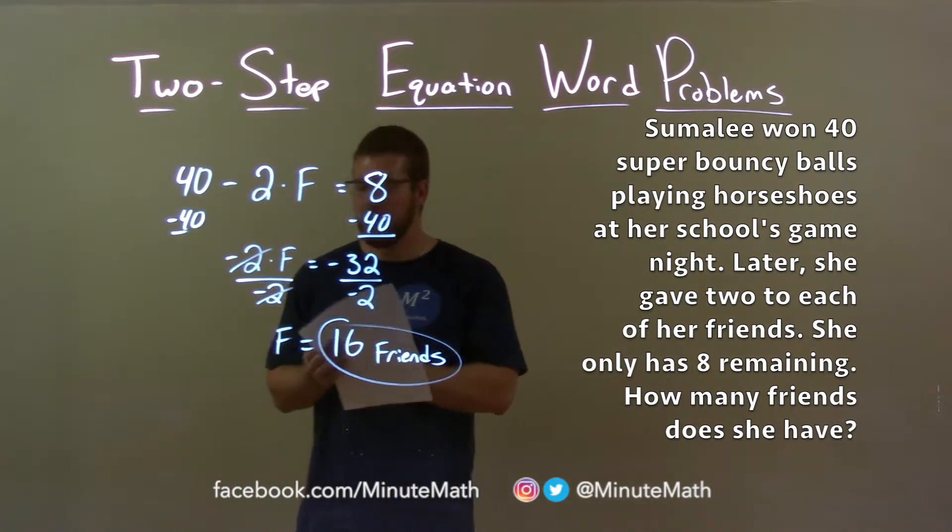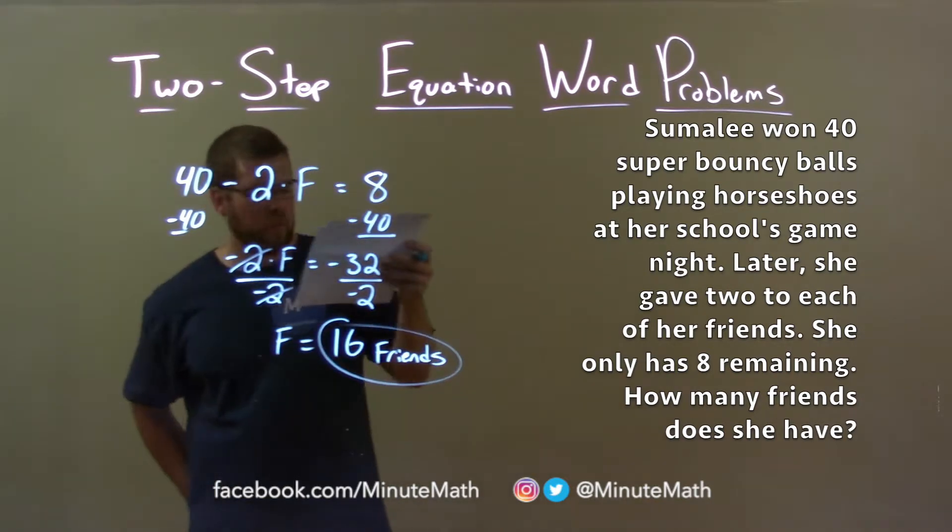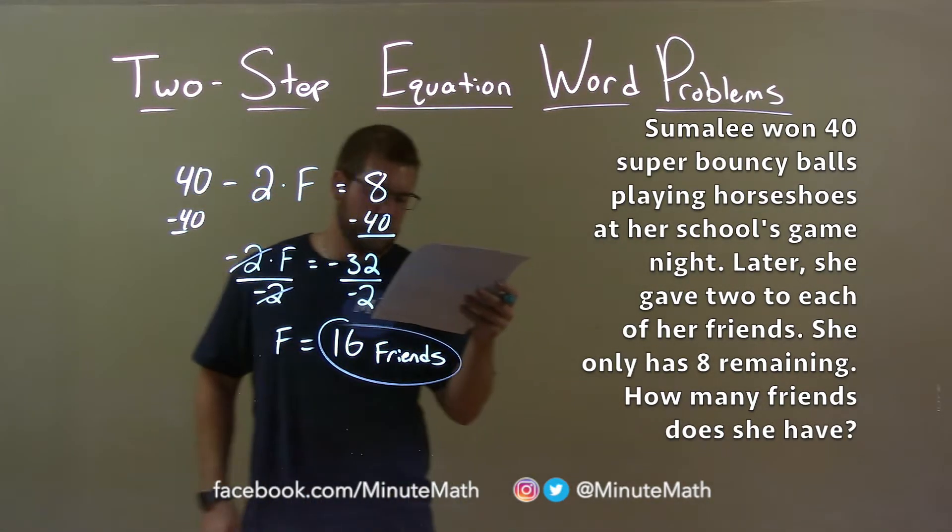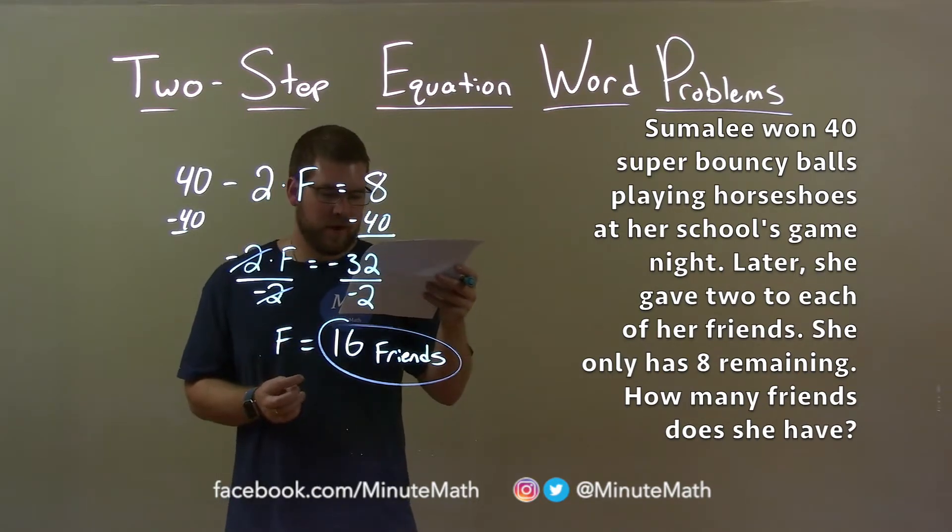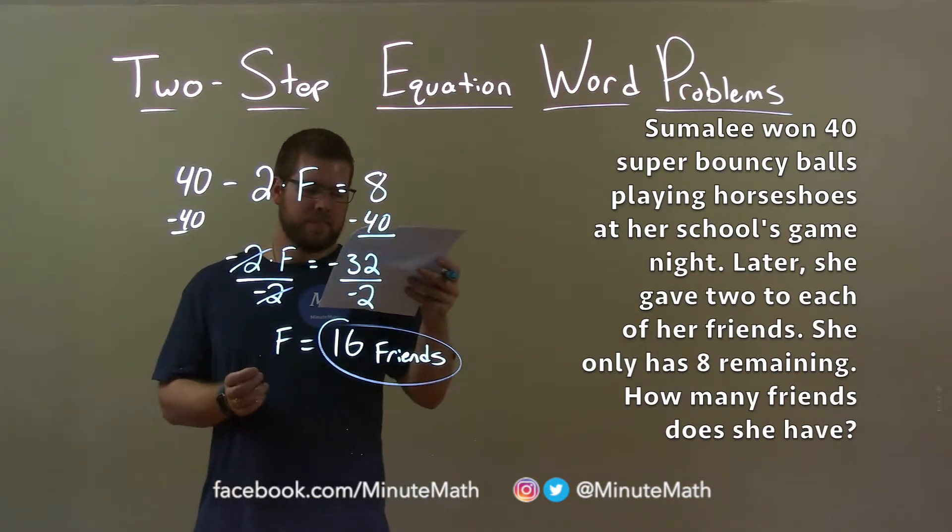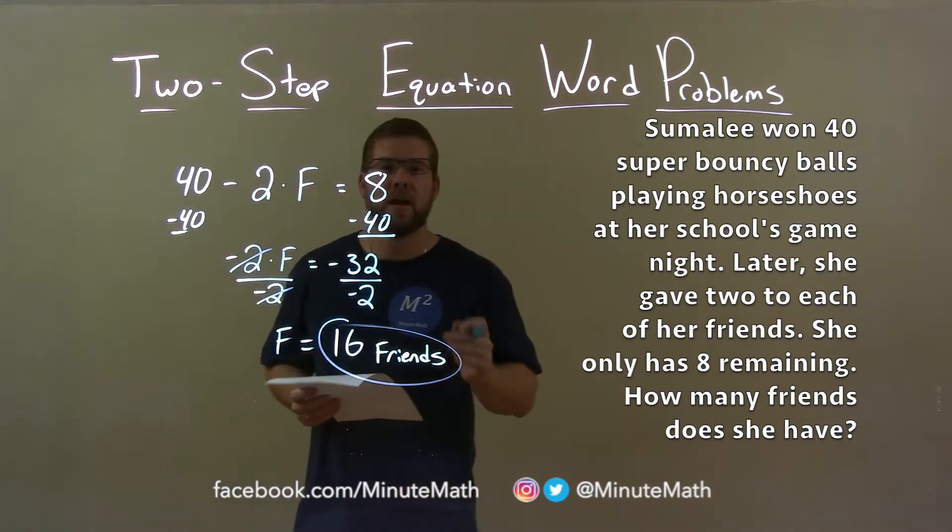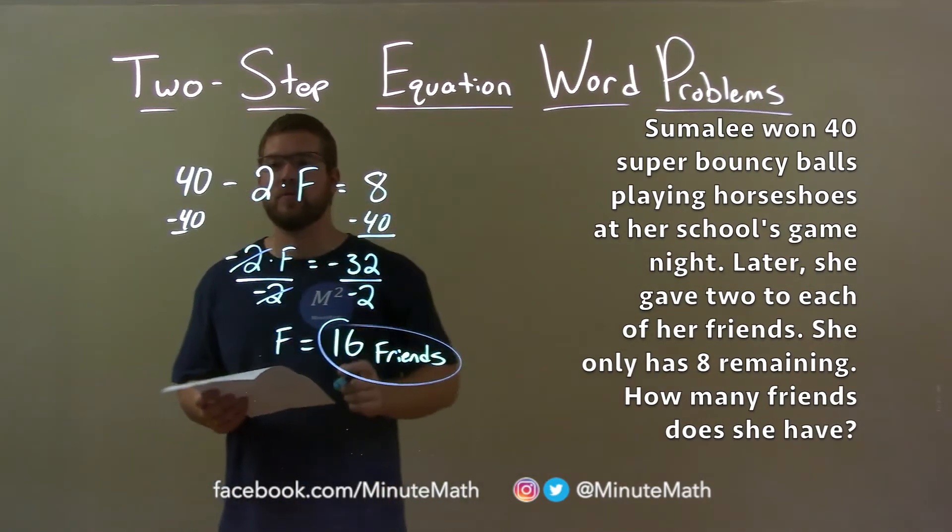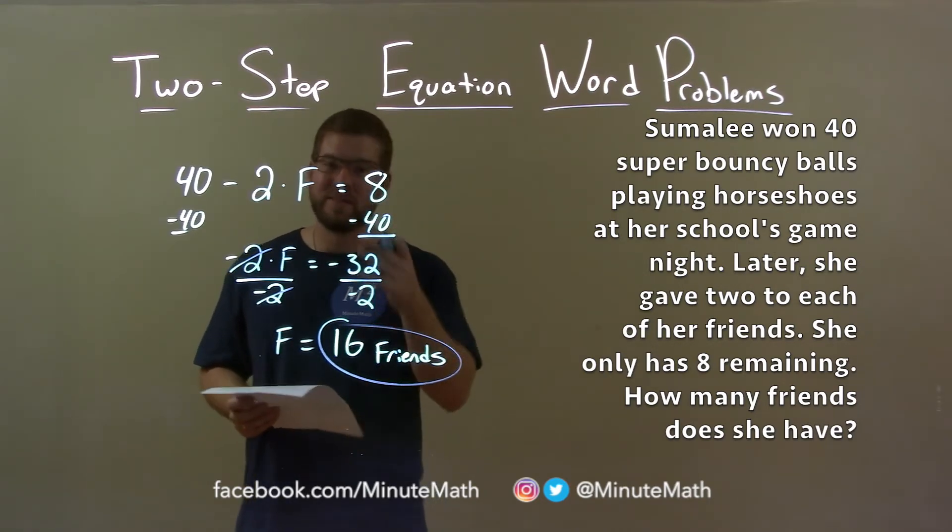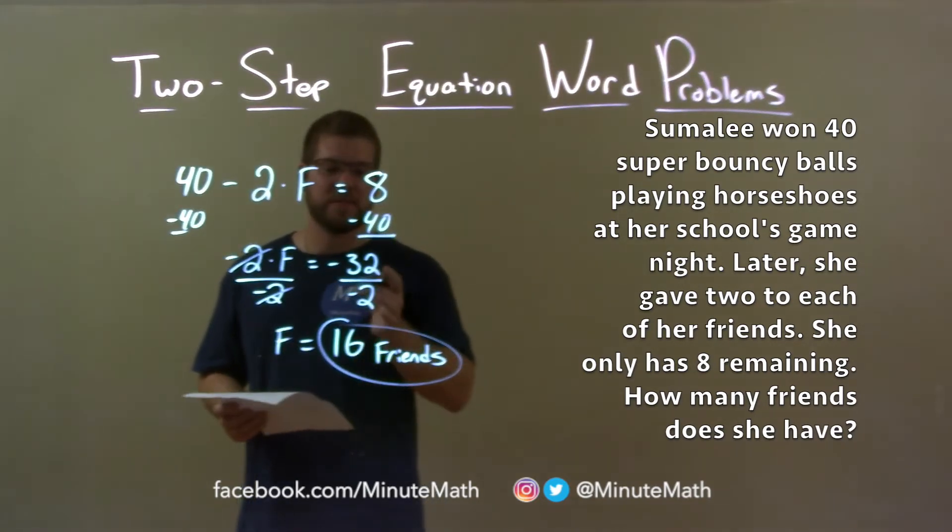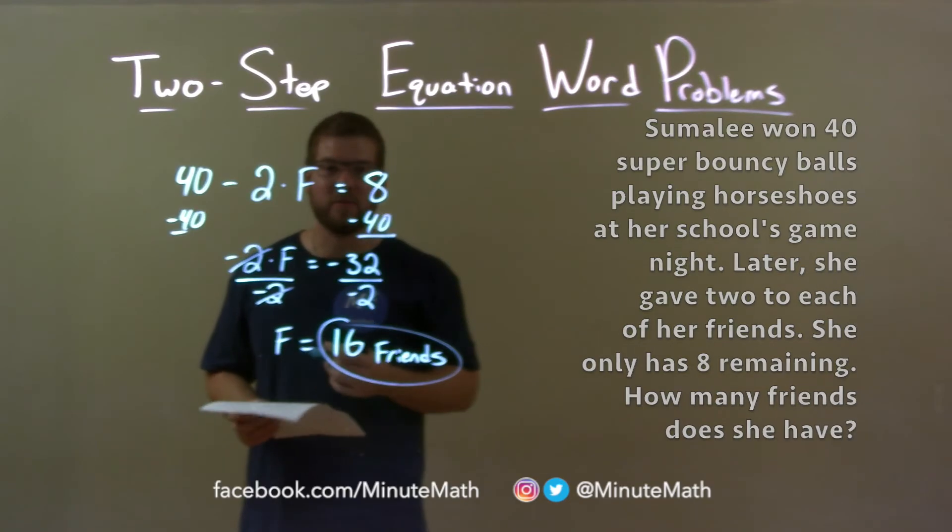Quick recap. We're given the word problem: Sumalee won 40 super bouncy balls playing horseshoes at her school's game night. Later, she gave two to each of her friends. She only has eight remaining. How many friends does she have? With that information, I created an equation, 40 minus two times f equals eight, and I solve for f, the number of friends that Sumalee has. That came out to be 16 friends, our final answer.